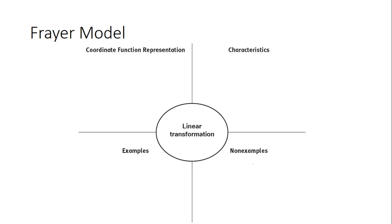So our vocabulary for today is linear transformation, and we're going to fill in our Frayer model. First we're going to talk about the coordinate function representation — what does that look like? Yesterday we reviewed coordinate function representations of our four basics: rotation, reflection, translation, and dilation. Now we're going to talk about linear transformations using our Frayer model. A linear transformation is a combination of multiple geometric transformations, and the key thing is they're all centered around the origin.